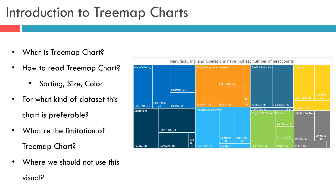For example, a box within an office expenses dataset might display the percentage spent on furniture, and a box nested within that box might display the percentage spent on a desk. There are several different algorithms which can be used to determine how the rectangles in a Treemap should be sized and ordered. Excel uses the squarified algorithm, which attempts to render each rectangle as much like a square as the data and overall layout will allow.